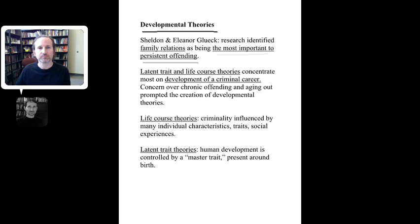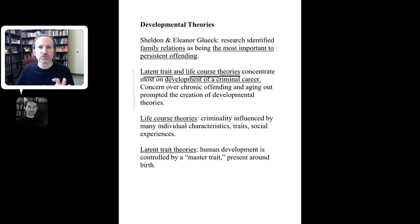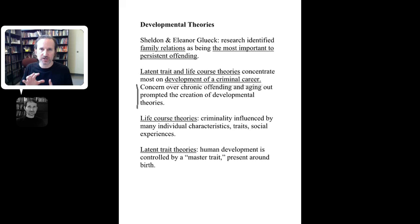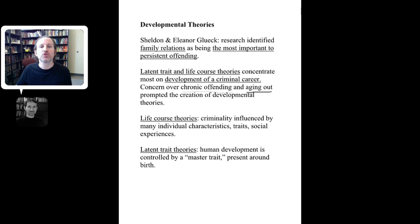There are two branches of theories that we'll look into here. One is latent trait theories and the other are life course theories. Together, these two are focused on the development of a criminal career — how criminal identity comes to be. There was increasing concern over the Philadelphia cohort study's 5% who were chronic recidivists. Chronic offending got people's attention, and the idea of aging out — criminals sometimes just stopping crime after a certain point — were the impetus behind these developmental theories.